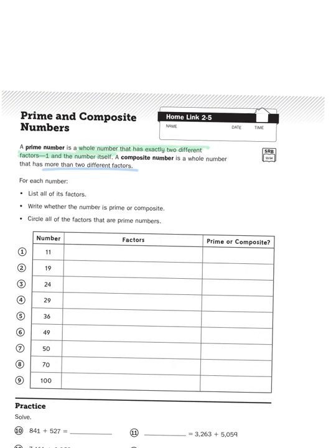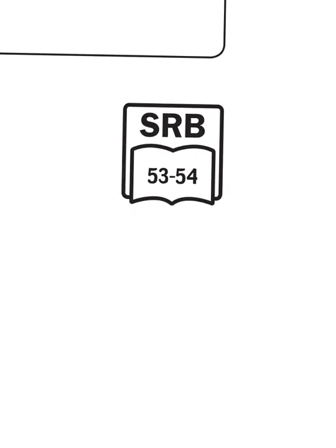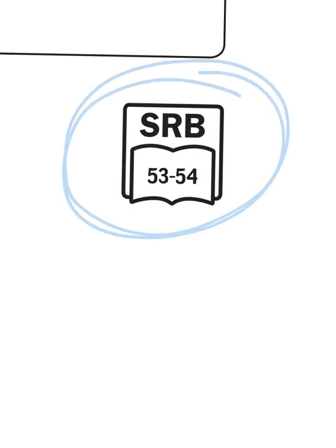Now, you might be thinking, but I don't know which ones are prime or not. Well, if you've never noticed this little icon in the corner of your home links or at the top of your math journal pages, SRB is exactly what it stands for, your student reference book. If you go to pages 53 and 54, it's got an explanation about prime numbers, and it even gives you a list of which of the first 20 numbers, 1 through 20, are prime or composite.